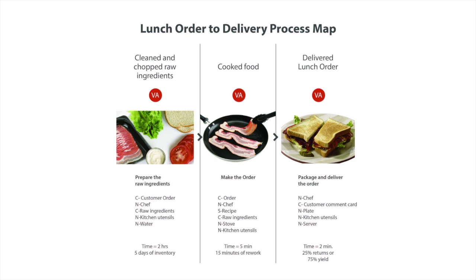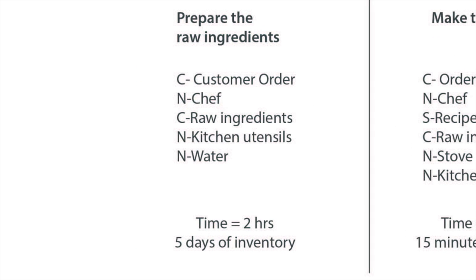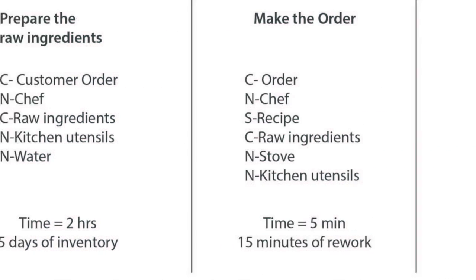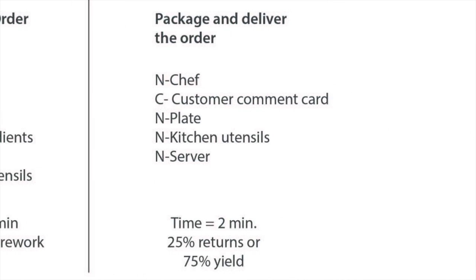Are there measurements that indicate things you can improve? In our BLT example from the measure video, we had a 5-day inventory for raw ingredients, with 2 hours of prep time and 15 minutes of rework on the order. Also, 25% of all orders were being returned by the customer. Clearly, this process would be much better with lower inventory to prevent spoilage and fewer orders being returned by customers.